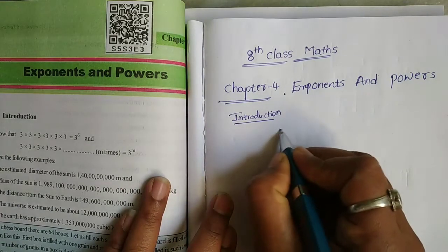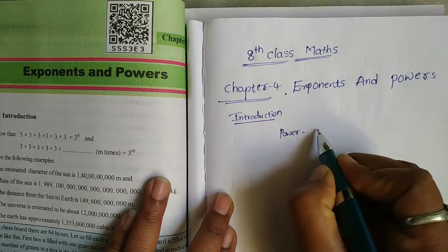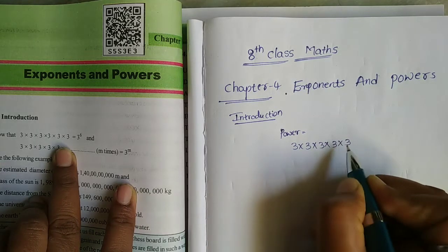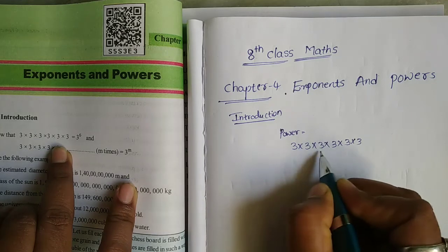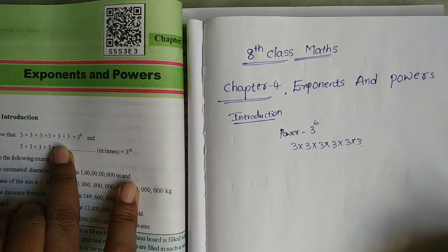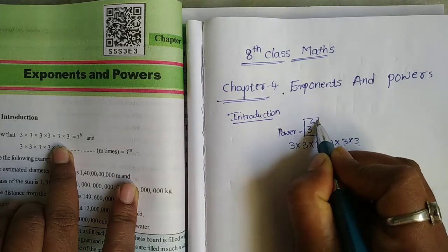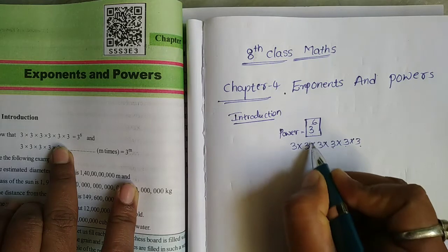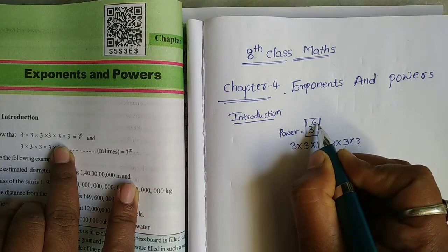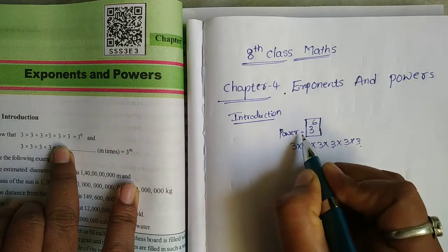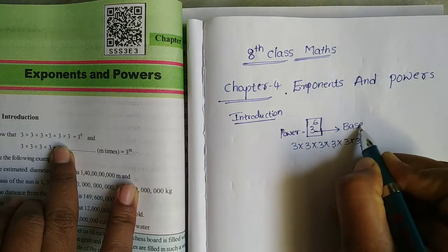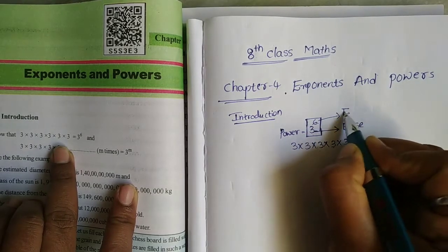First of all, what is power? Power is here: 3 into 3 into 3 into 3 into 3 into 3 — that is 3 multiplied 6 times. So, 3 to the power of 6. Here, 3 means base and 6 means exponent.